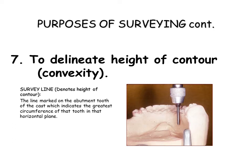19. To delineate the height of contour on abutment teeth, and to locate areas of undesirable tooth undercut that are to be avoided, eliminated, or blocked out. 20. This will include areas of the teeth to be contacted by rigid connectors, the location of non-retentive reciprocal and stabilizing arms, and the location of retentive clasp terminals.